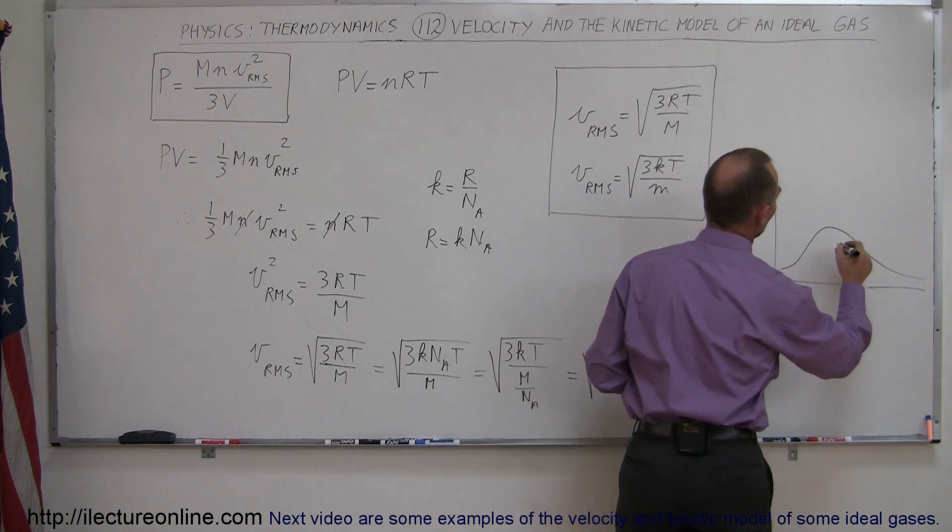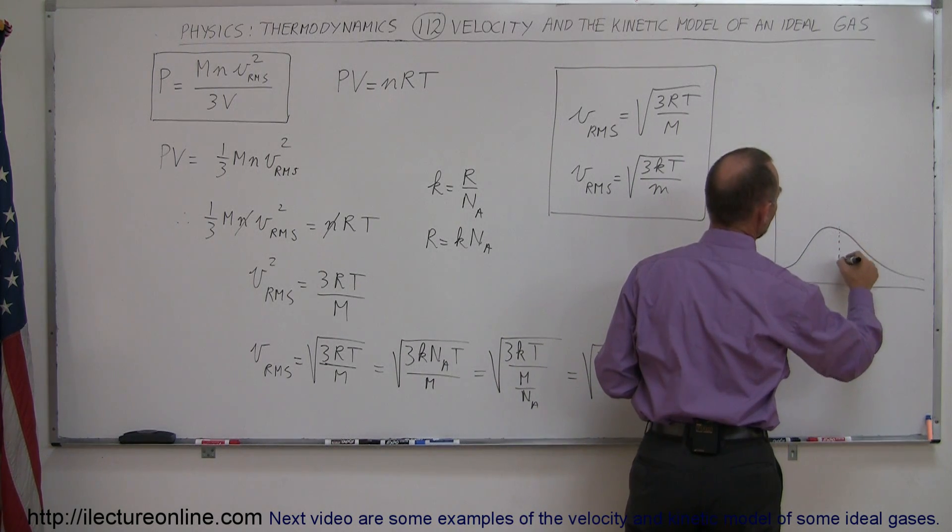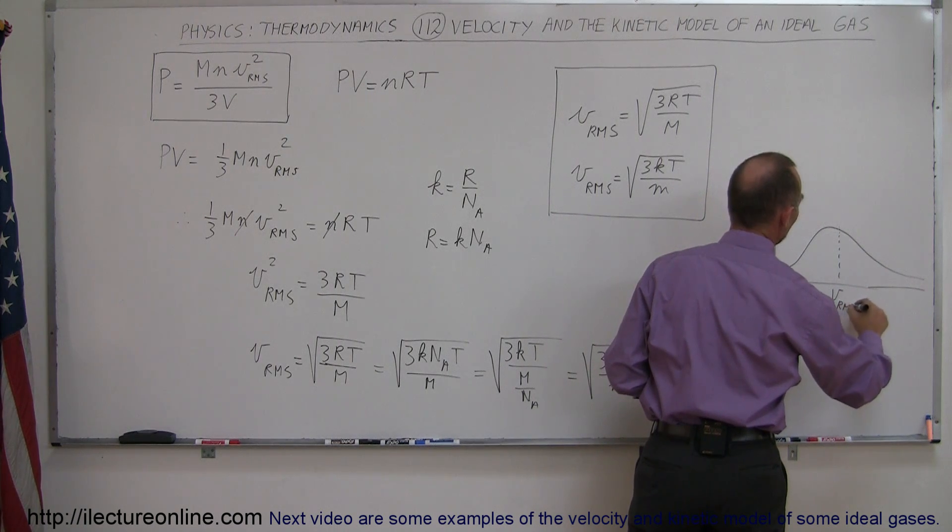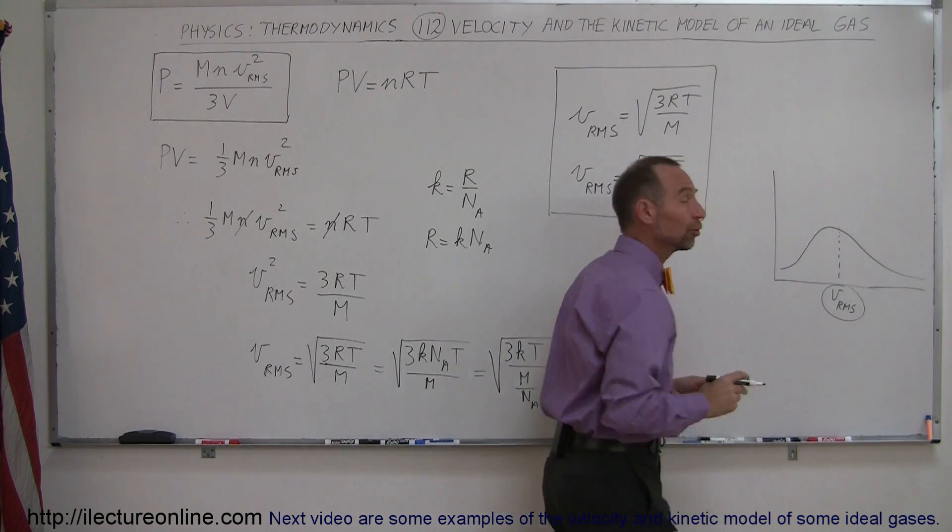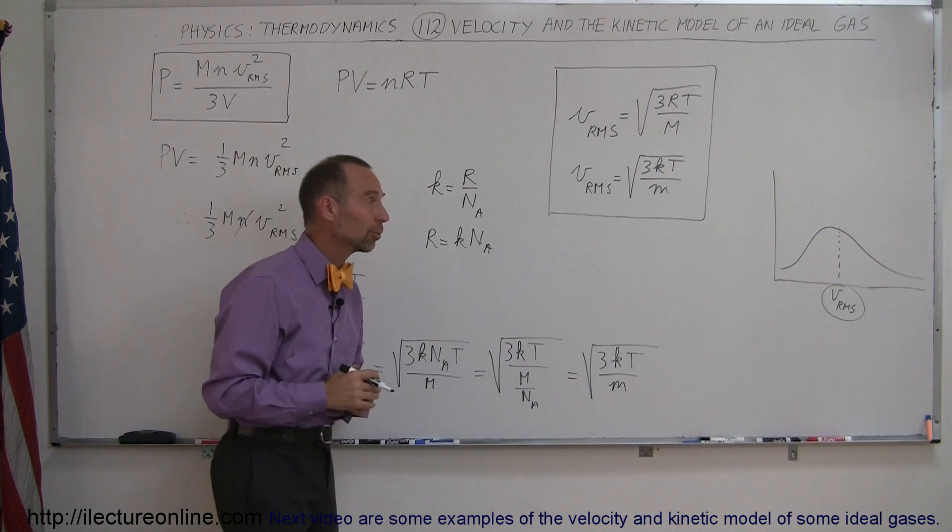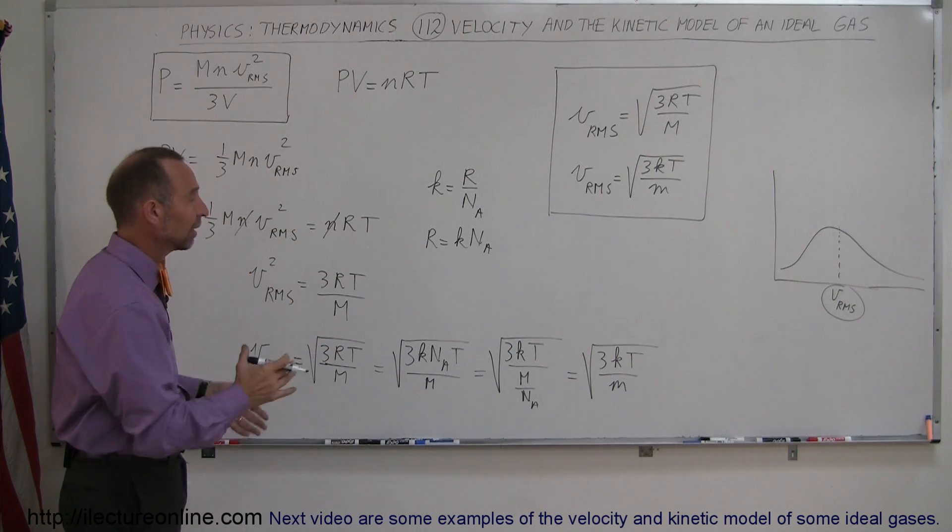And the RMS velocity is somewhere around here. Which means VRMS is a representative velocity of the gas molecules, but realizing that some move faster and some move slower. But at least that gives you a pretty good idea.